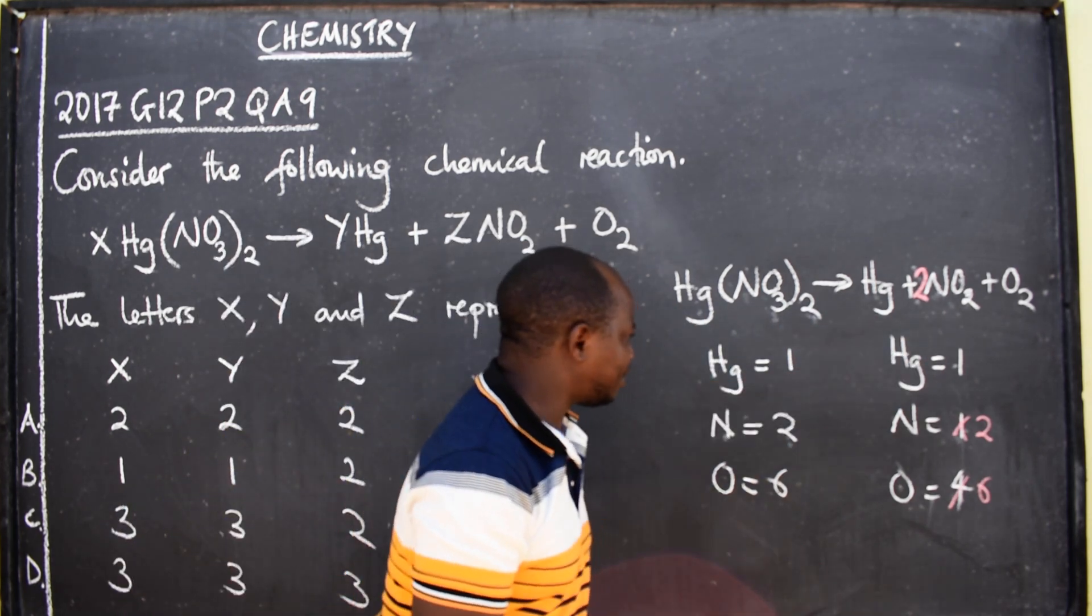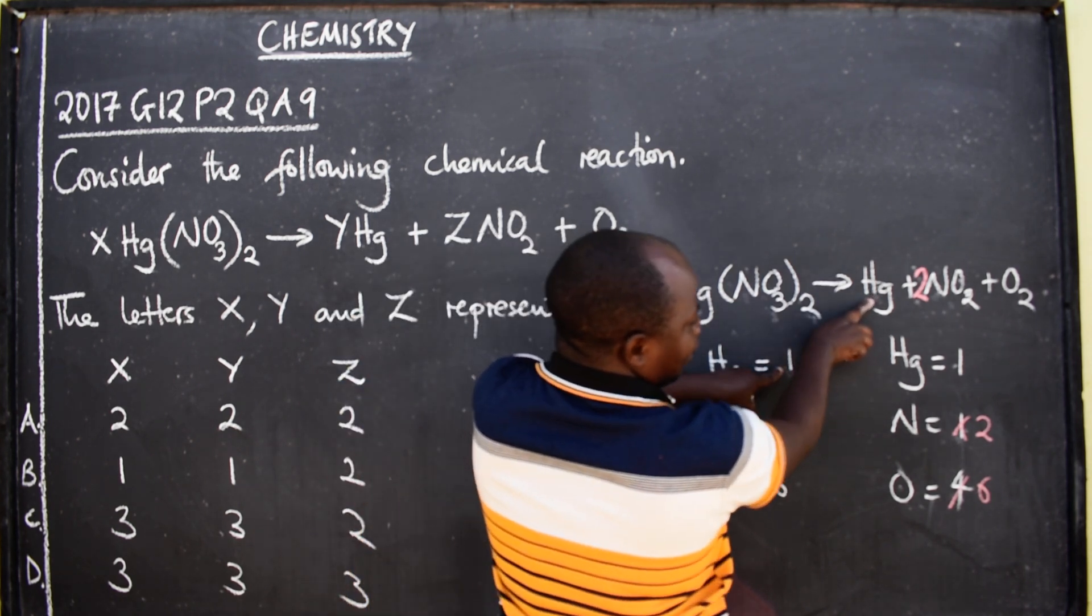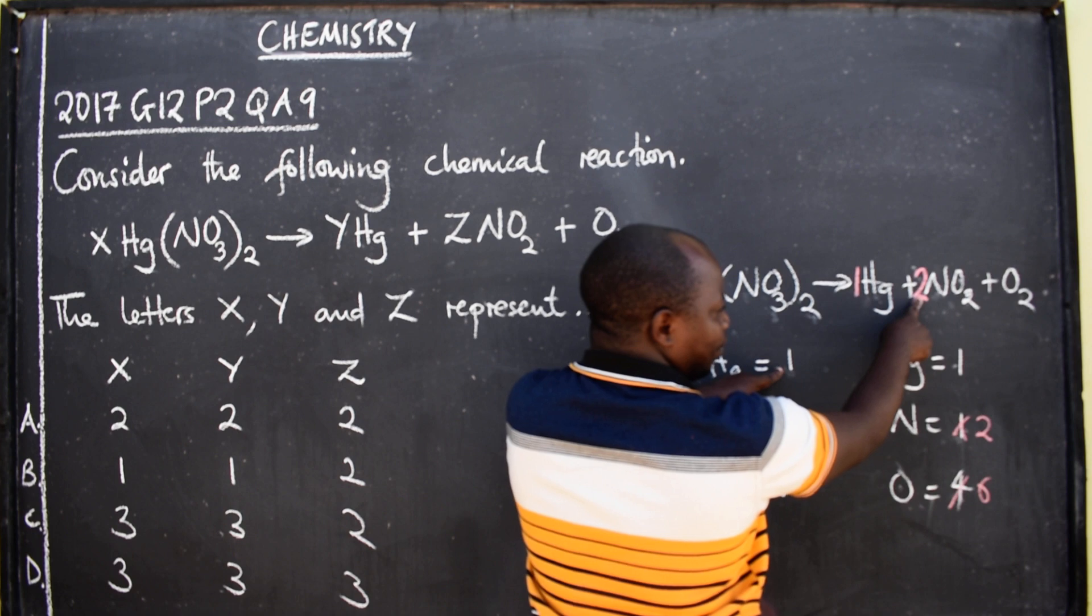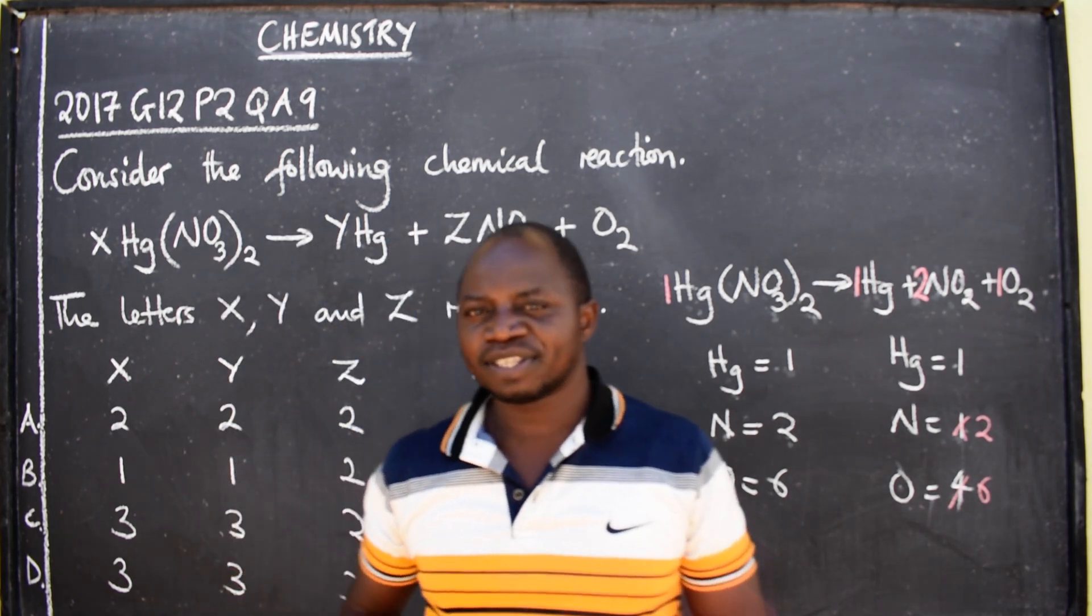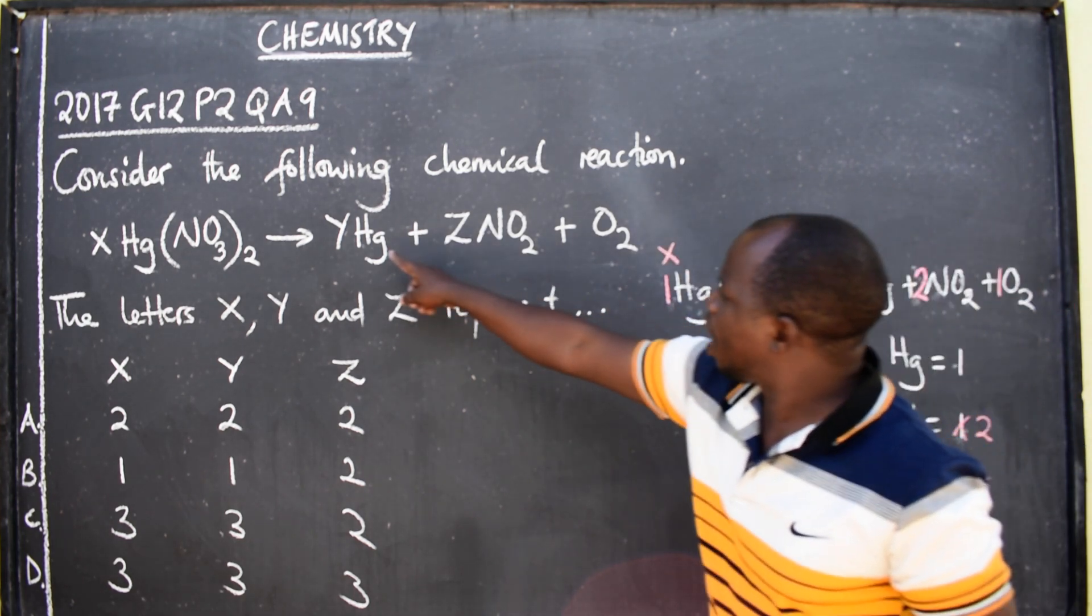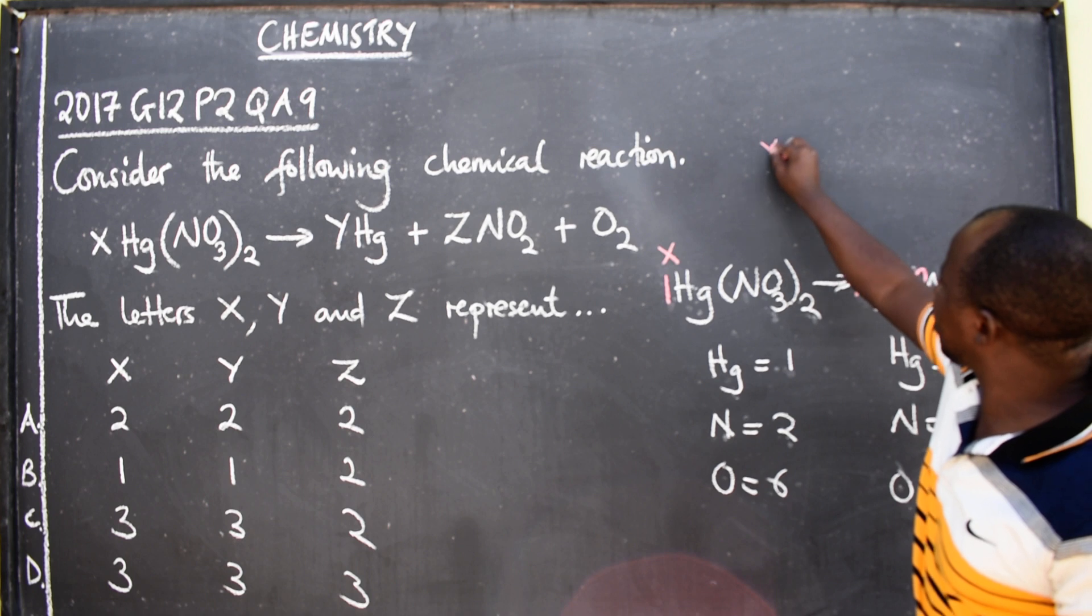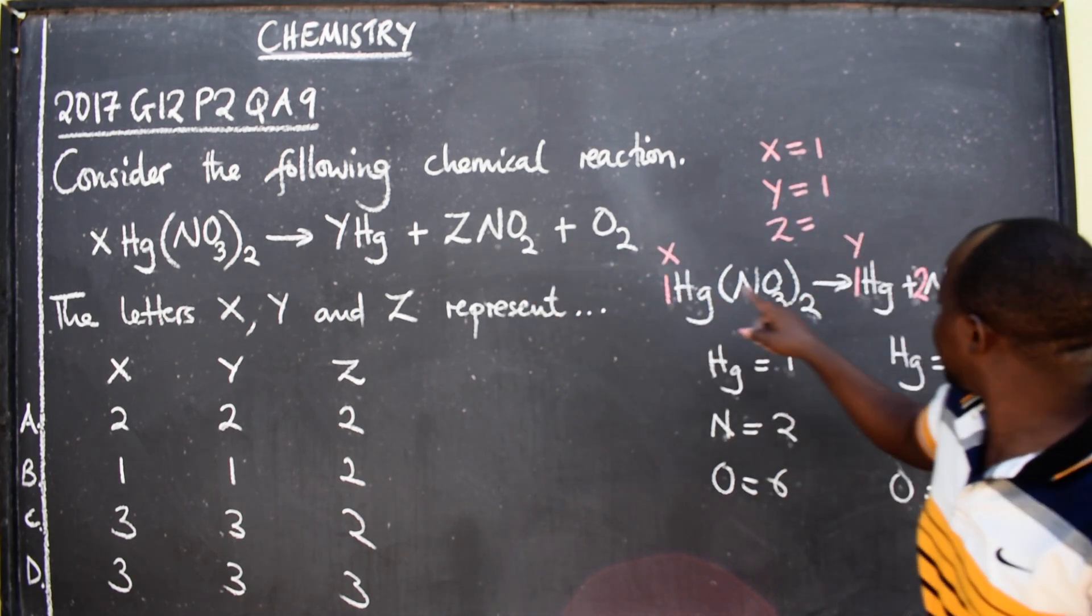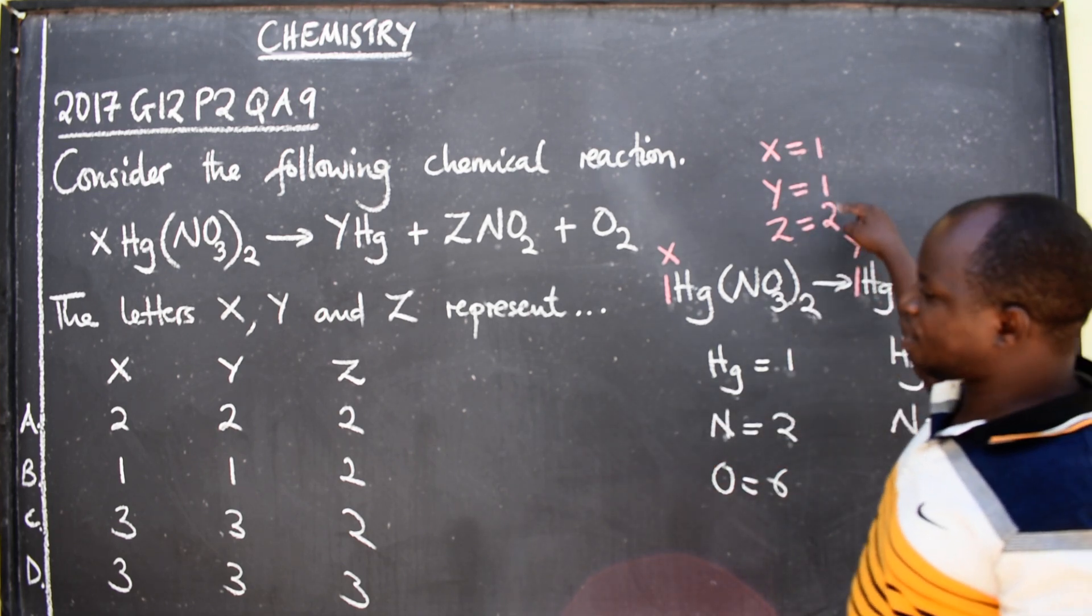Now we can put the numbers. This side will be two, here two, here one. So X is here, meaning X is one. Y is here, meaning Y is one. Z is here, so Z is two. Which option is correct? One, one, two - that's B.